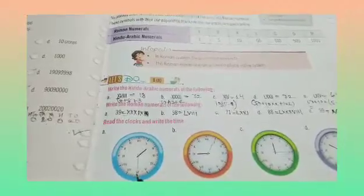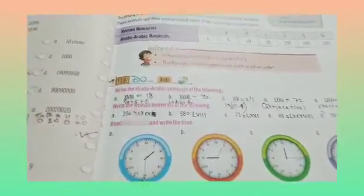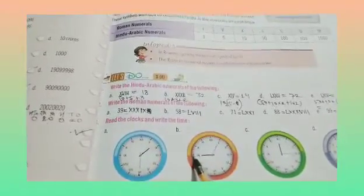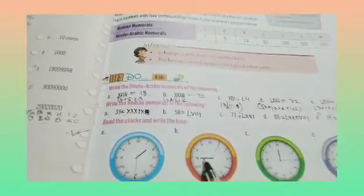One hand of the clock is at 1 and the other hand of the clock is at 6. So 1 is to 6, and 6 into 5 is 30, so the time is 1:30. In Part B, one hand of the clock is at 9 and the other hand is at 1, so 9 is to 5, giving us 9:05.